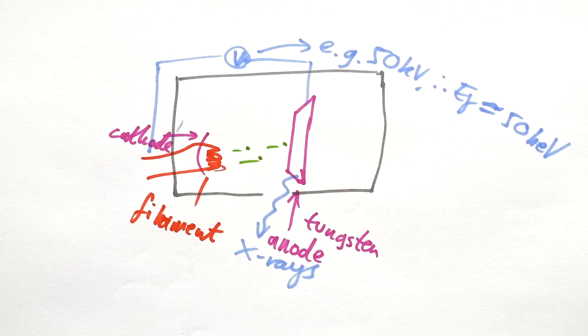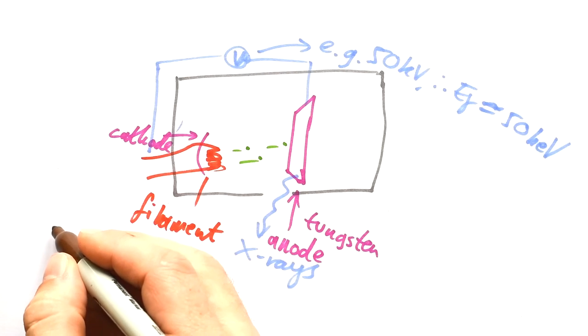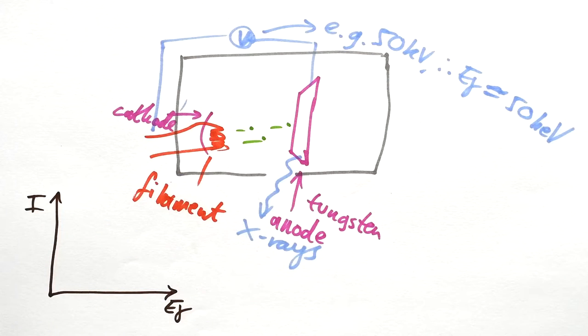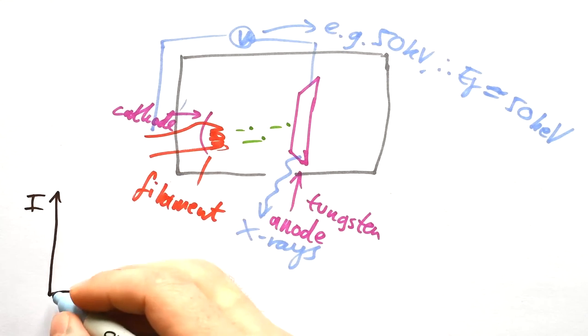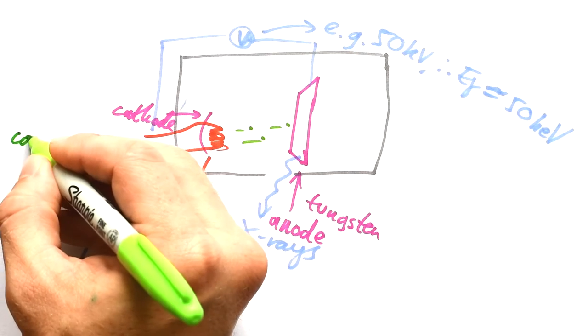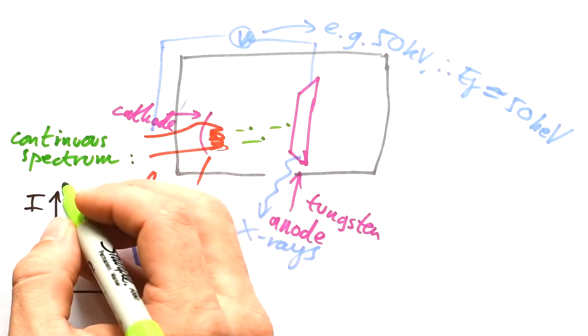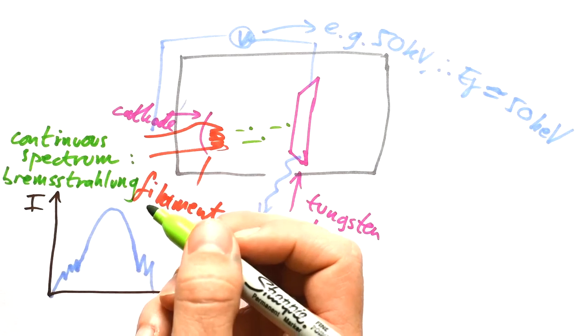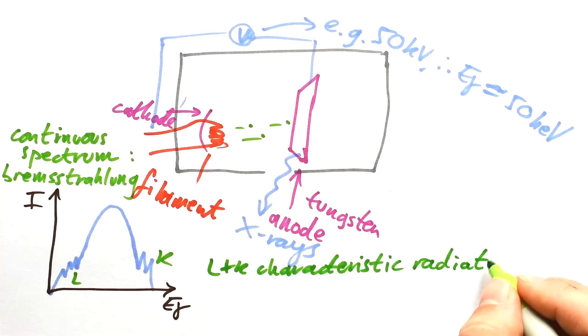But we don't just get one flavor of photon being produced. What we have is a continuous distribution of X-ray photon energies. This continuous spectrum is given a German word, Bremsstrahlung. Now, why do we have these spikes here? They're given different letters, L and K. L and K are characteristic radiation from the tungsten.